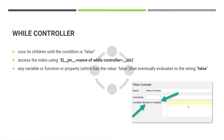The While Controller runs its children until the condition you specify is false. The condition could be a function, a variable, or a property which has the value false. Once the condition is evaluated to false, it will terminate the execution. Otherwise, it will continue execution until the condition is false.